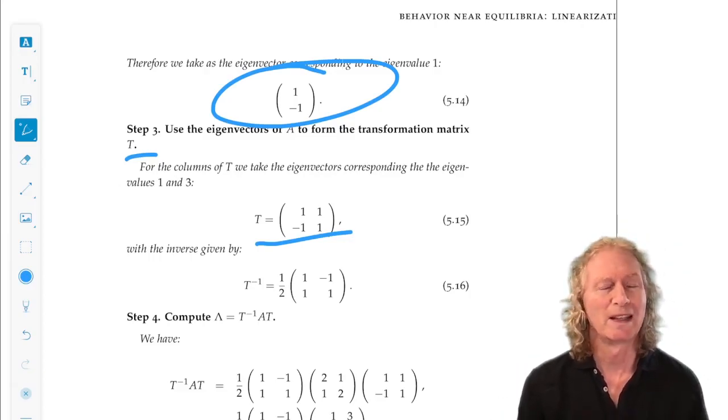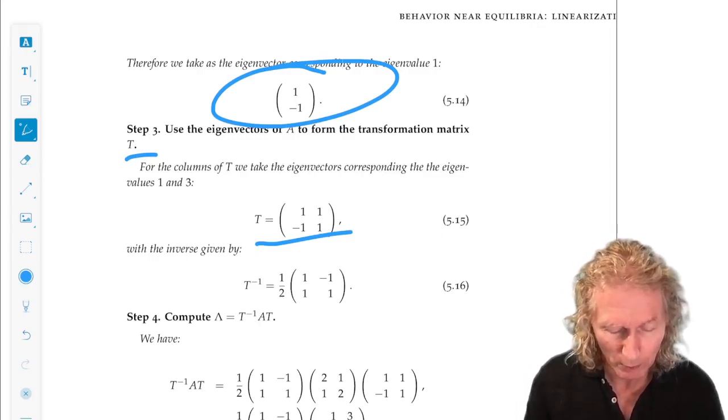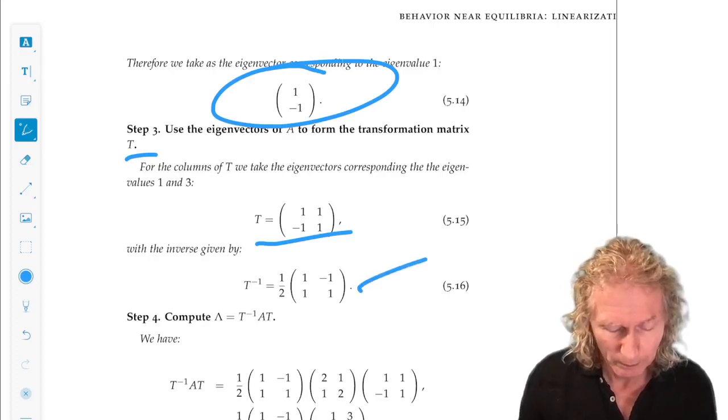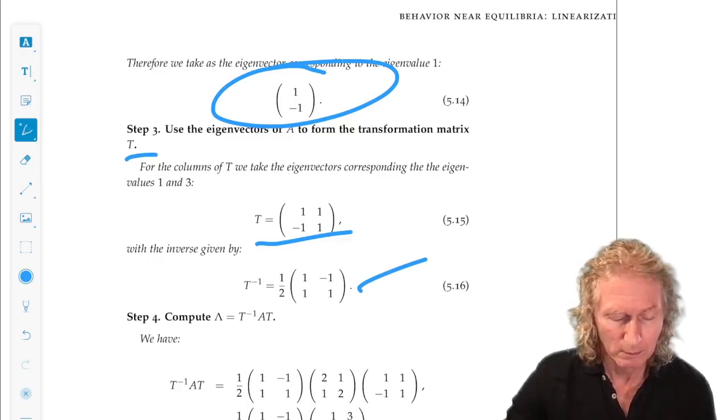Now, we compute T inverse. And there's a handy formula for that that you can remember. You'll use it a lot in this course. And always check it. Multiply T by T inverse and get the identity.